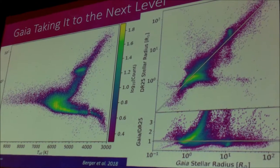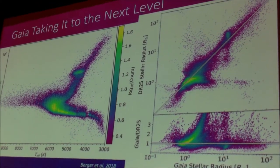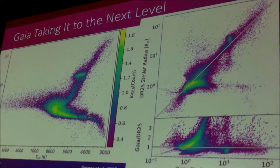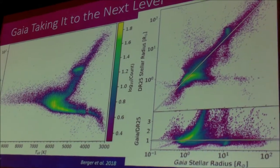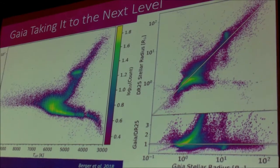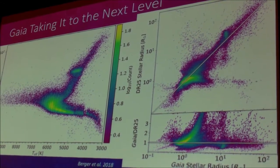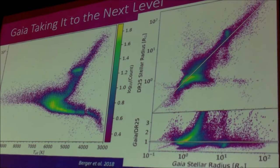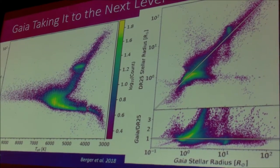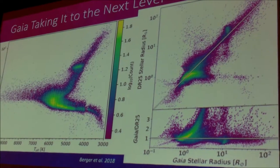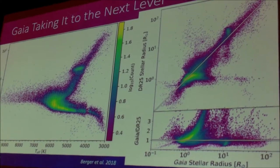Gaia took this to the next level. This comes out of Travis's paper from last year, and while it is based on Gaia data, as was mentioned earlier in the week, the temperatures were actually taken from Cevito's paper in order to derive the stellar radii and the planet radii. While this was based strongly on Gaia, they used the work that the follow-up programs provided.